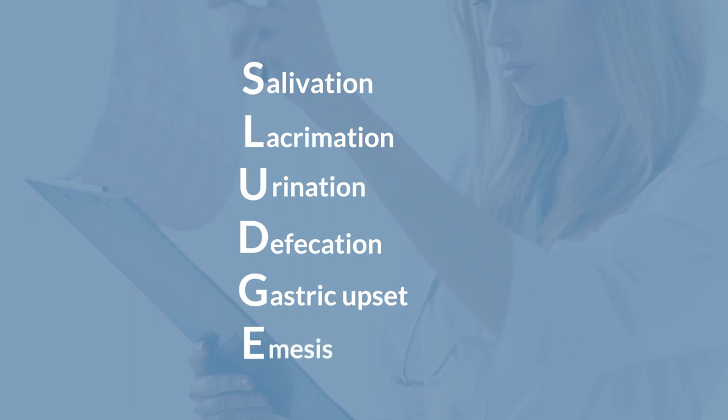E stands for emesis — patients with excessive acetylcholine production may vomit or experience more emesis than a normal patient. That's the SLUDGE mnemonic you'll use if you're suspicious of your patient having a cholinergic crisis. Be sure to use this mnemonic to your advantage.